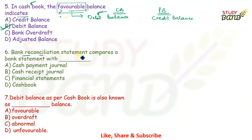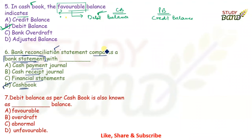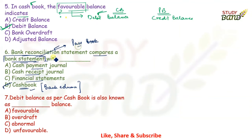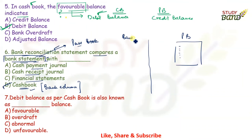MCQ 6: Bank Reconciliation Statement compares a bank statement with — option D: cash book. BRS compares the pass book (bank statement) with the bank column of the cash book. Note: a bank statement is a large sheet while the pass book records entries day by day, but they contain similar information and are essentially the same thing. Answer: option D — cash book.